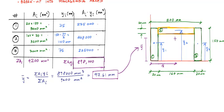So my centroid is located 100 millimeters horizontally from the reference and 97.61 millimeters vertically from the origin.